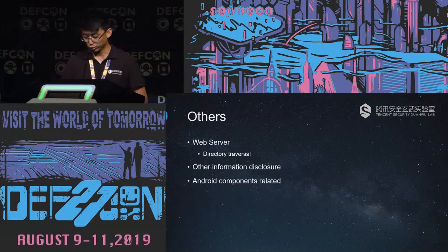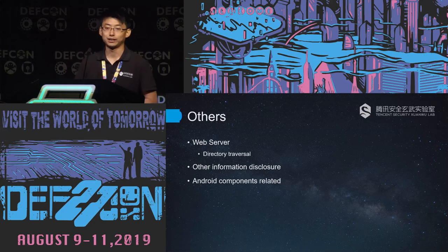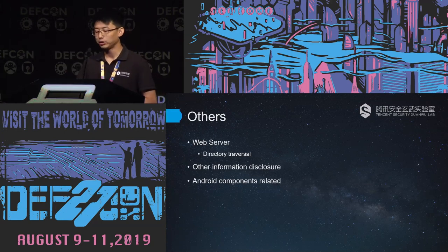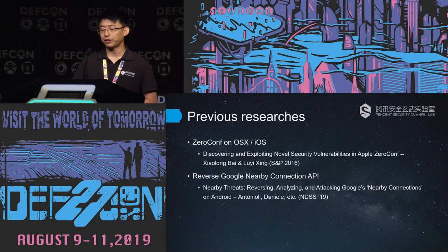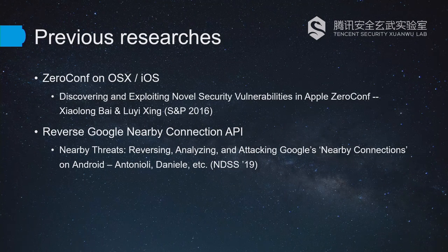We will show the demo later. We also found some other interesting attack surfaces — for example, some sharing apps will start a web server, which opens more doors for attackers. There are also Android component-related attack surfaces. We are not the first researchers to notice nearby communication apps. There has been research about zero-conf on macOS and iOS, and research on AirDrop finding some vulnerabilities. And in 2019, some researchers reverse-analyzed the Google Nearby Connection API. However, there was nothing about file sharing apps on Android.